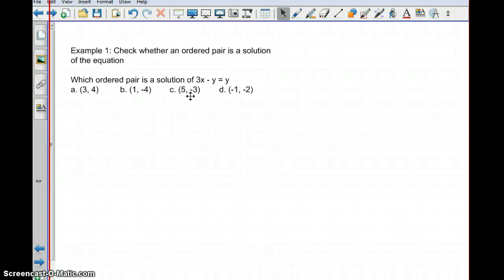So let's start with this first example. We want to check to see whether or not an ordered pair is in fact the solution of an equation. So we're given the equation. Actually, this is a typo. This should be 3x minus y equals 7. And we want to figure out which ordered pair is the solution. So we're given four options here. Now again, the one that is the solution should be able to be plugged into the equation to produce a true statement. Each ordered pair is made up of an x and a y. So we just simply plug those in.